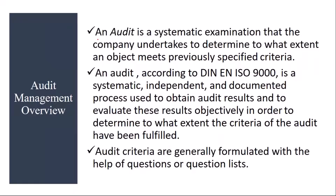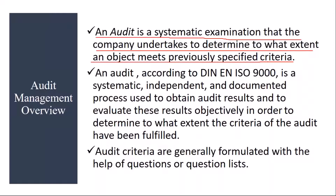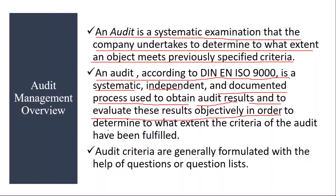An audit is a systematic examination that the company undertakes to determine to what extent an object meets previously specified criteria. According to DIN EN ISO 9000 standards, an audit is a systematic, independent, and documented process used to obtain audit results and to evaluate these results objectively in order to determine to what extent the criteria of the audit have been fulfilled.